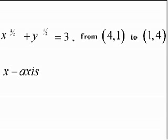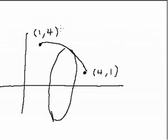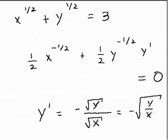Our next example is x to the 1/2 plus y to the 1/2 equals 3, going from the point (4,1) to the point (1,4), revolving about the x-axis. We differentiate implicitly: 1/2 x to the negative 1/2 plus 1/2 y to the negative 1/2 times y prime equals 0. This gives us y prime as negative the square root of y over x, and we substitute y as a function of x.